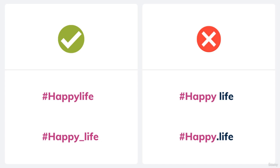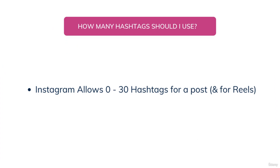I hope that wasn't hard to understand. So let's move on to the next question: how many hashtags should I use? Instagram allows a minimum of zero hashtags to a maximum of 30 hashtags for a post and for Instagram reels. For Instagram stories, the number is a bit different — we'll be talking more about stories in the story section and reels in the reel section.